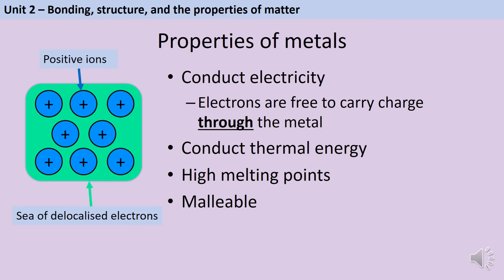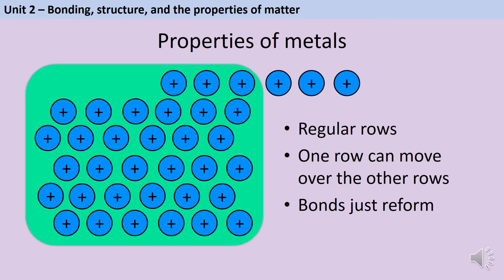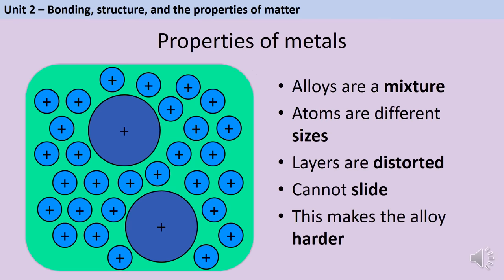Metals are malleable because when struck, entire rows of ions can slide over each other without disrupting the bonds — the metallic bonds simply reform in the new position. Alloys, by contrast, contain atoms of different sizes that distort those regular rows, preventing sliding, making alloys harder and less malleable than pure metals.